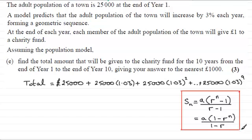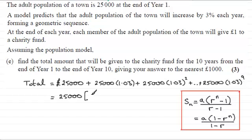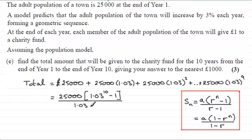So to do this question, we need to work out S₁₀ because we have 10 terms. It's going to be the first term 25,000, multiplied by (1.03 to the power 10 minus 1), and then we divide this all by the common ratio minus 1, which is 1.03 minus 1.